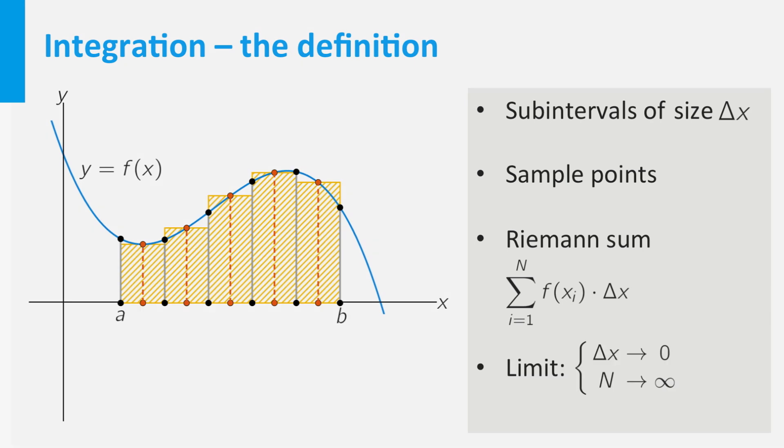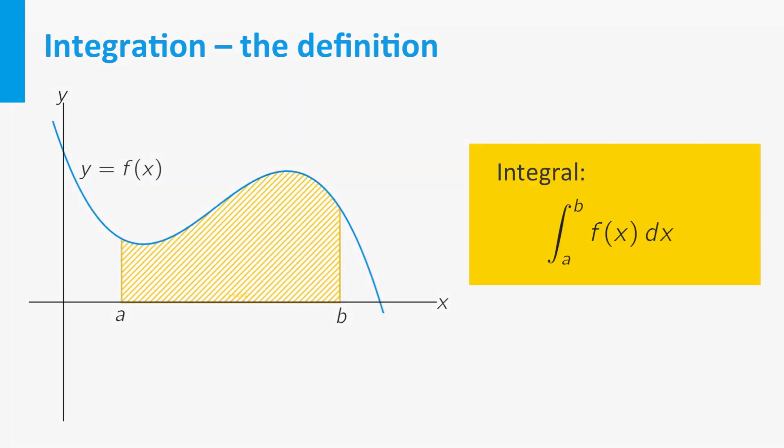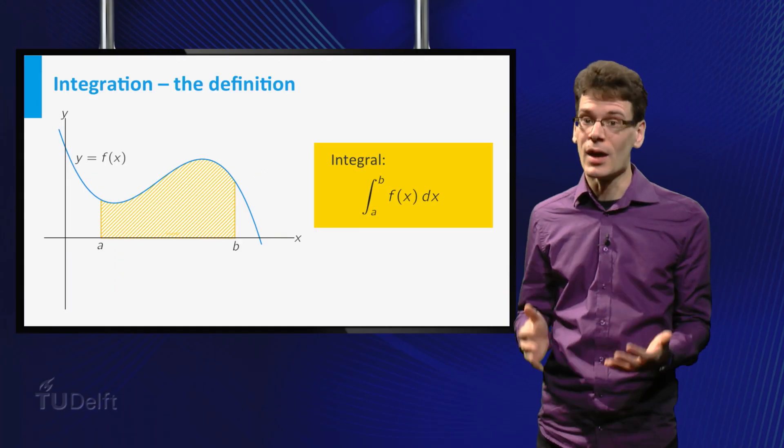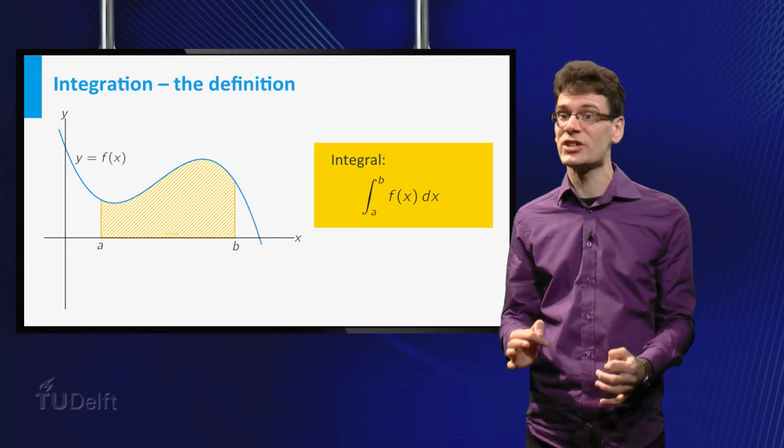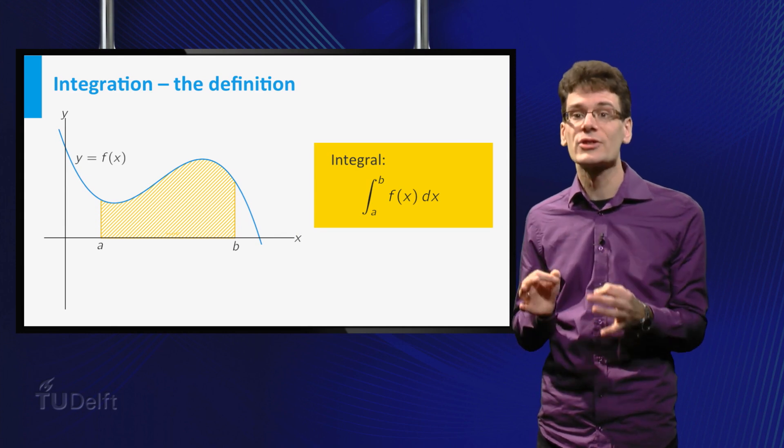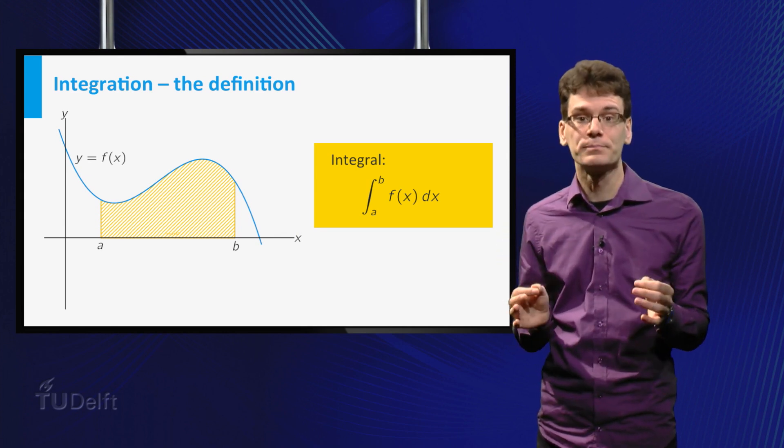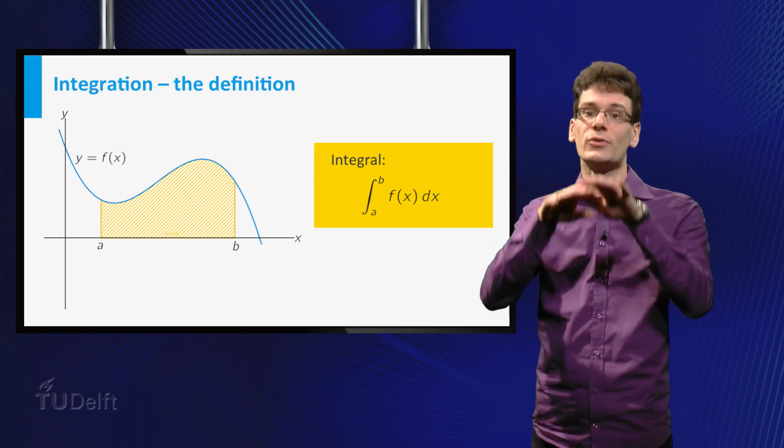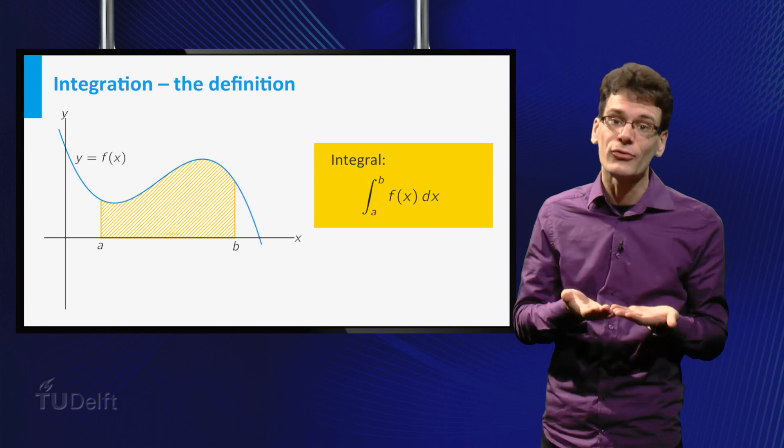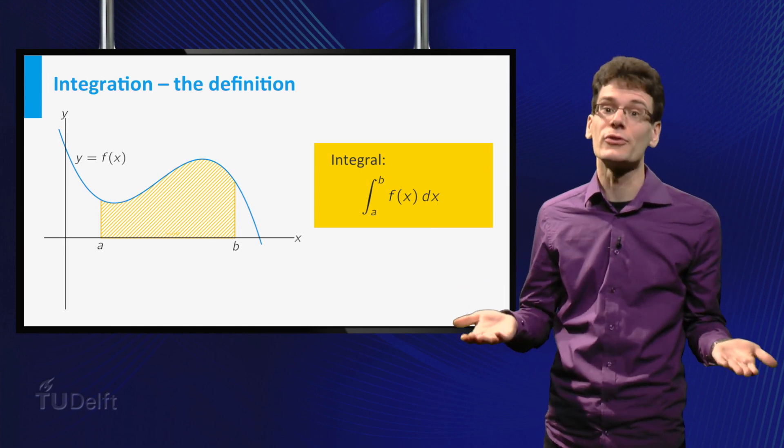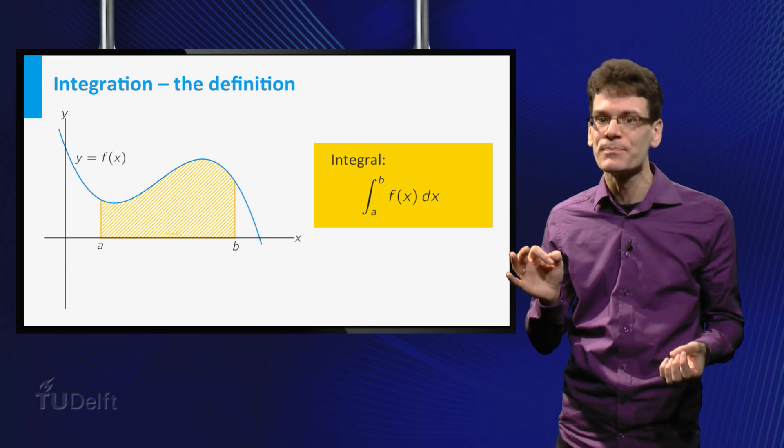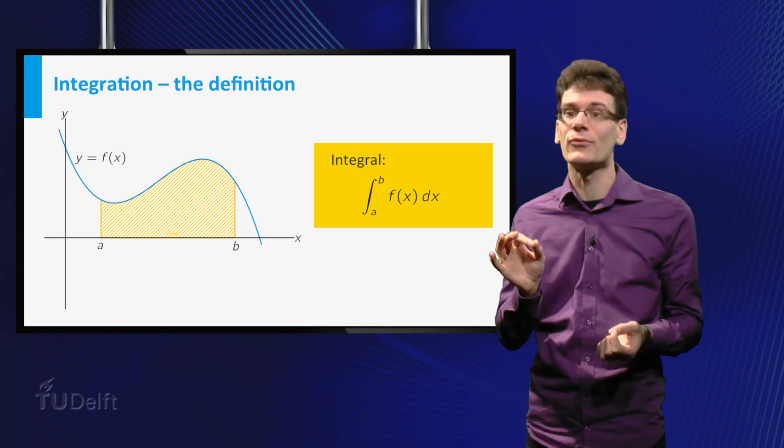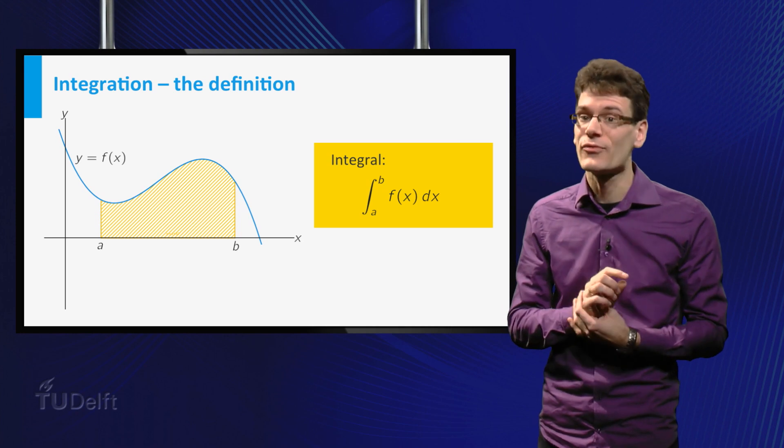We repeat this for increasing number n of intervals with decreasing length delta x. If the limit exists, independent of how we choose the sample points, then the number we obtain is by definition the integral of f of x for x ranging from A to B. In this case, the number represents the area of the region between the graph and the interval from A to B on the horizontal axis. I say specifically in this case; in general you have to be careful with this interpretation. More about that in the next video.